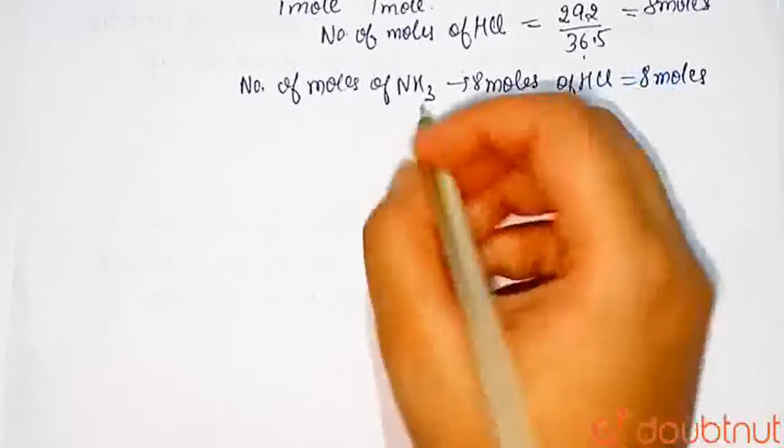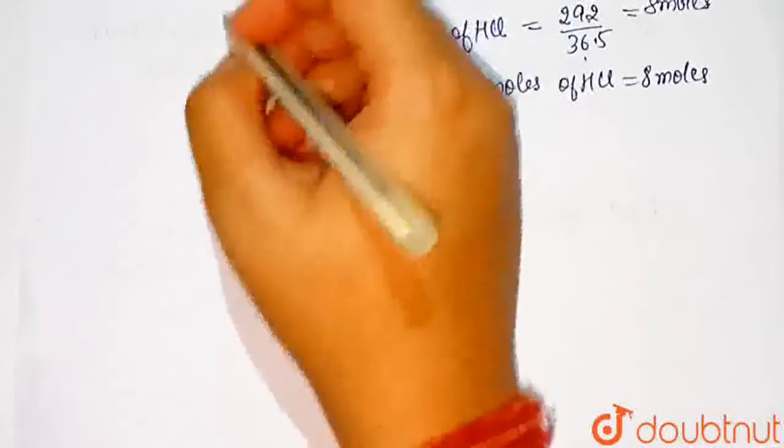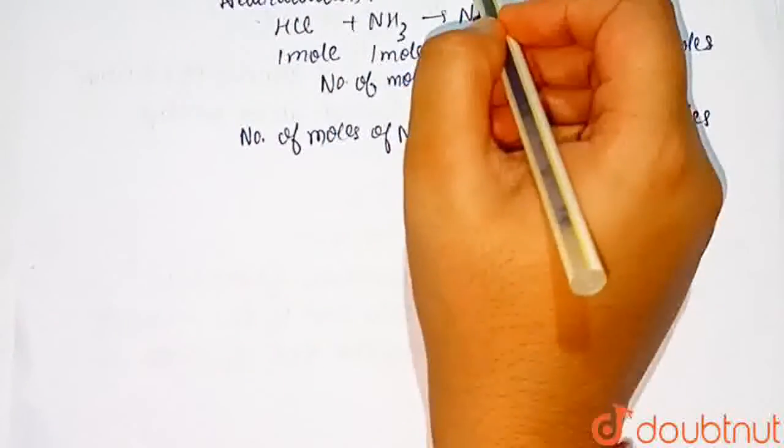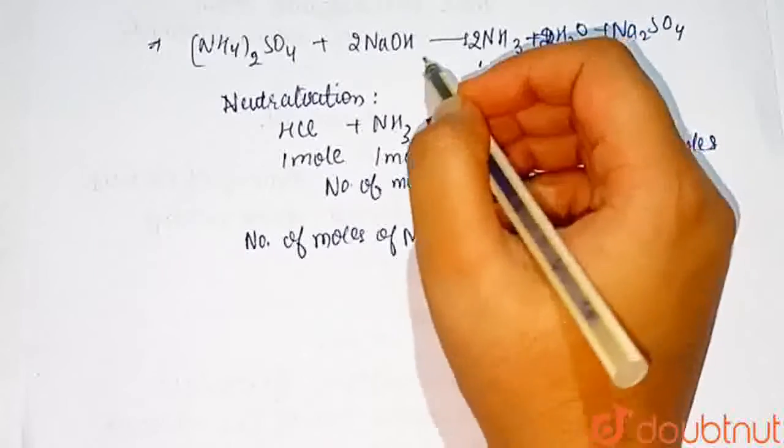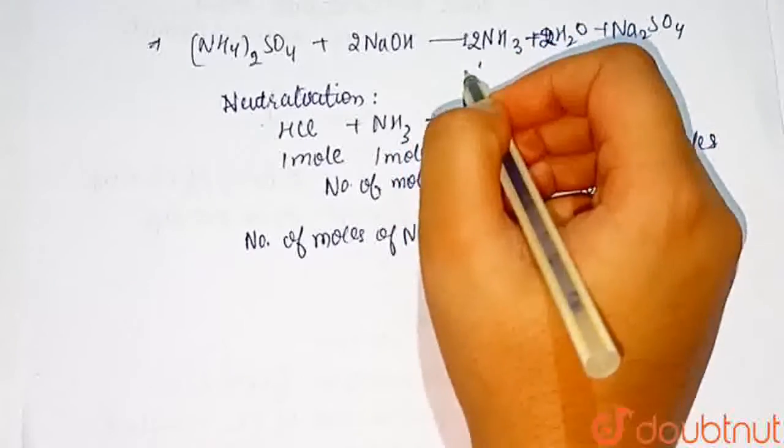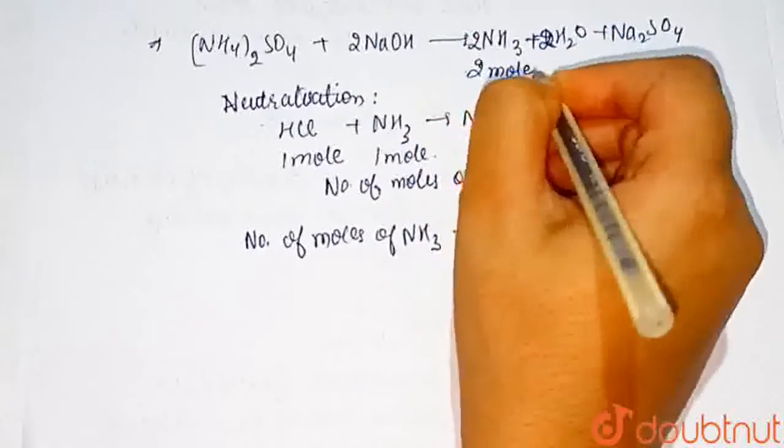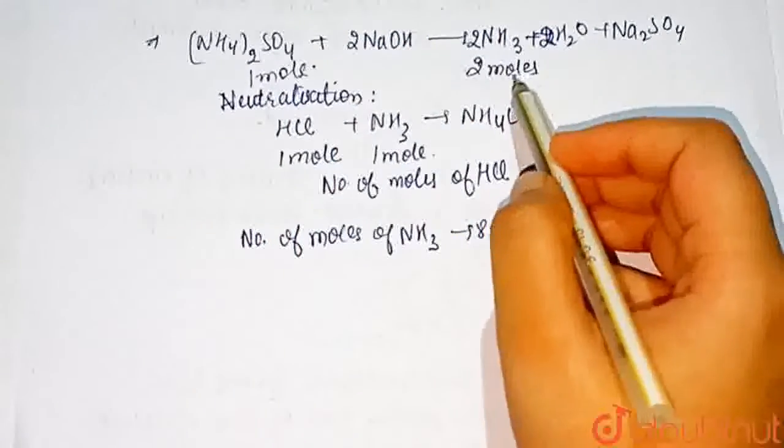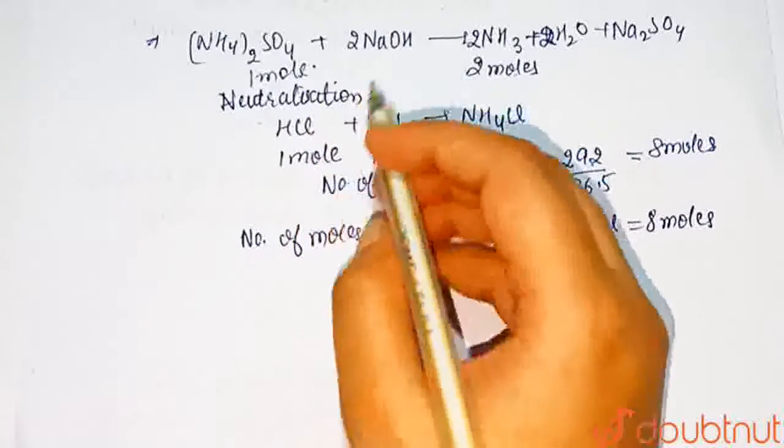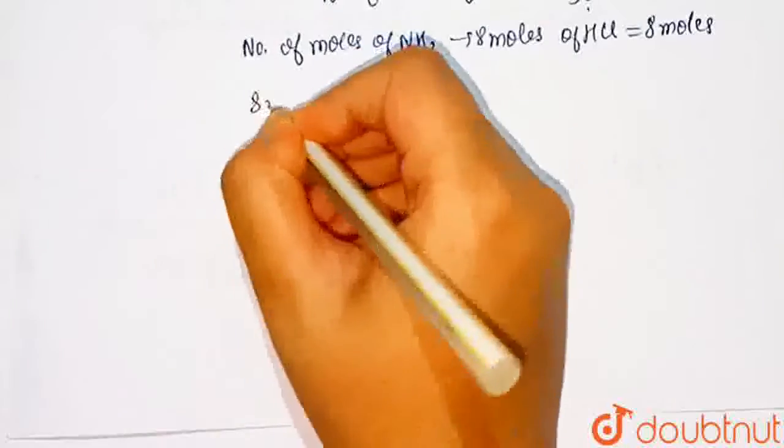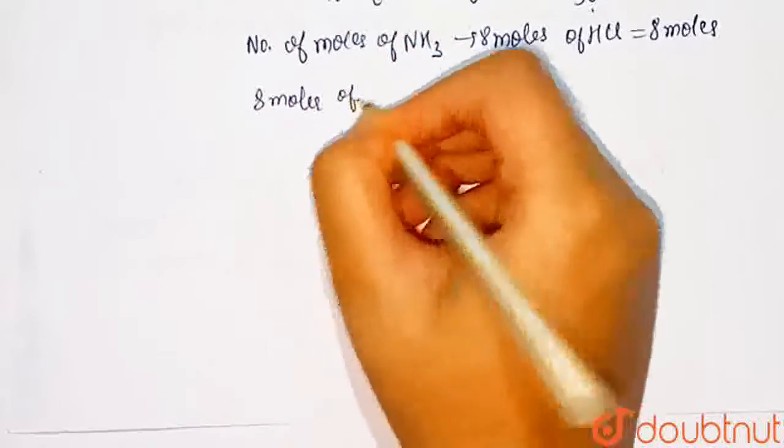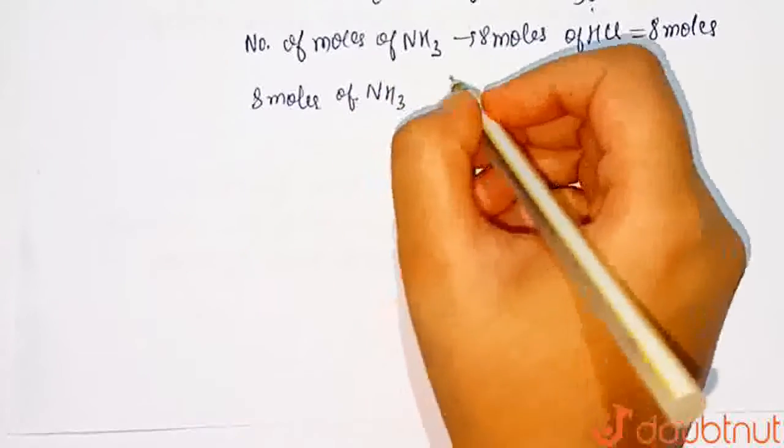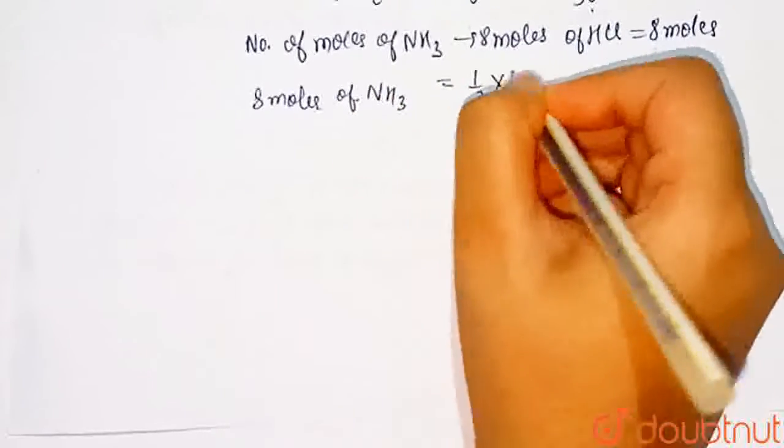Now from equation we know that 2 moles of ammonia in this equation, we see that 2 moles of ammonia is produced by 1 mole of ammonium sulfate. Now 8 moles of ammonia is produced by half into 8, which is equal to 4 moles of ammonium sulfate.